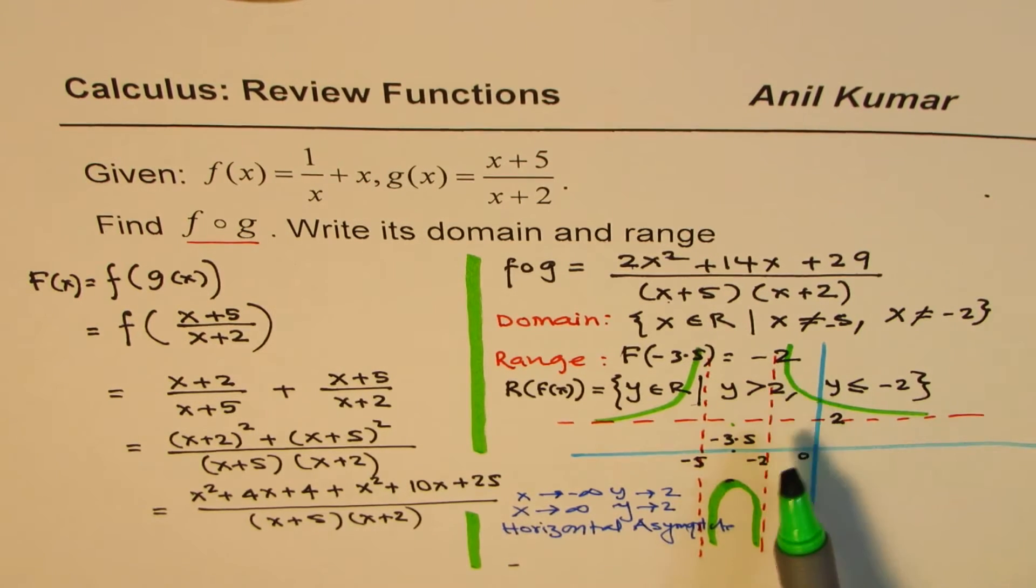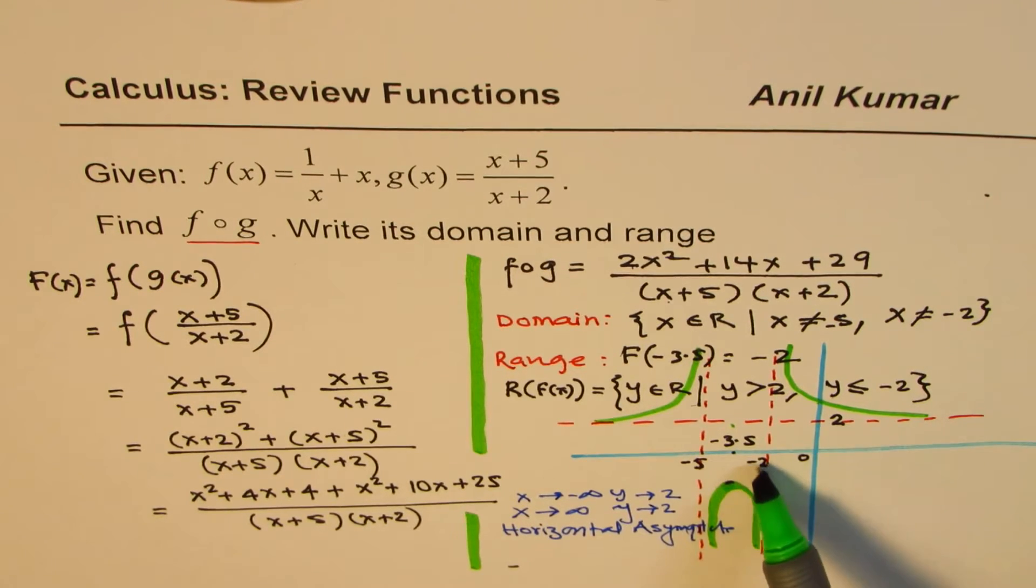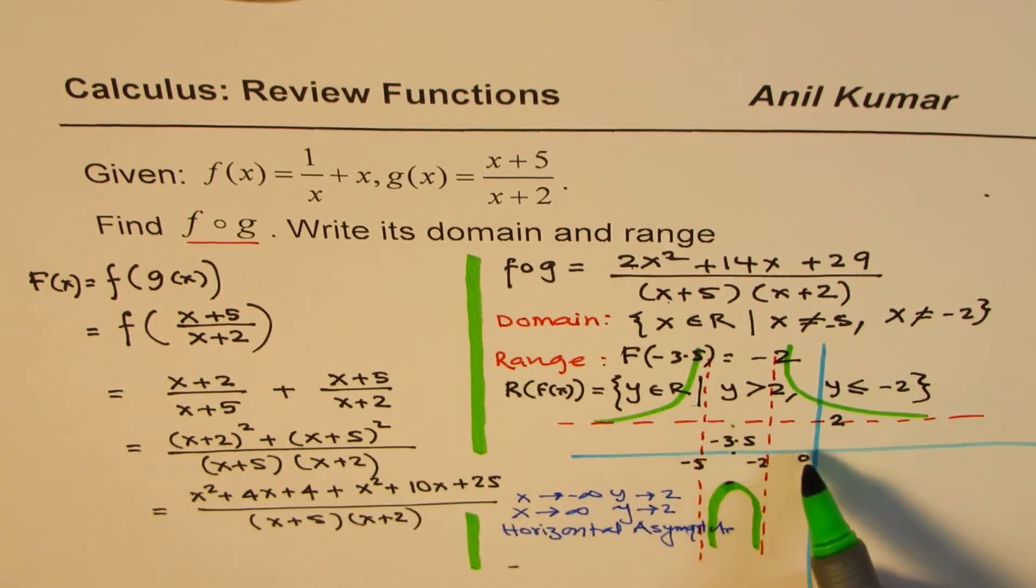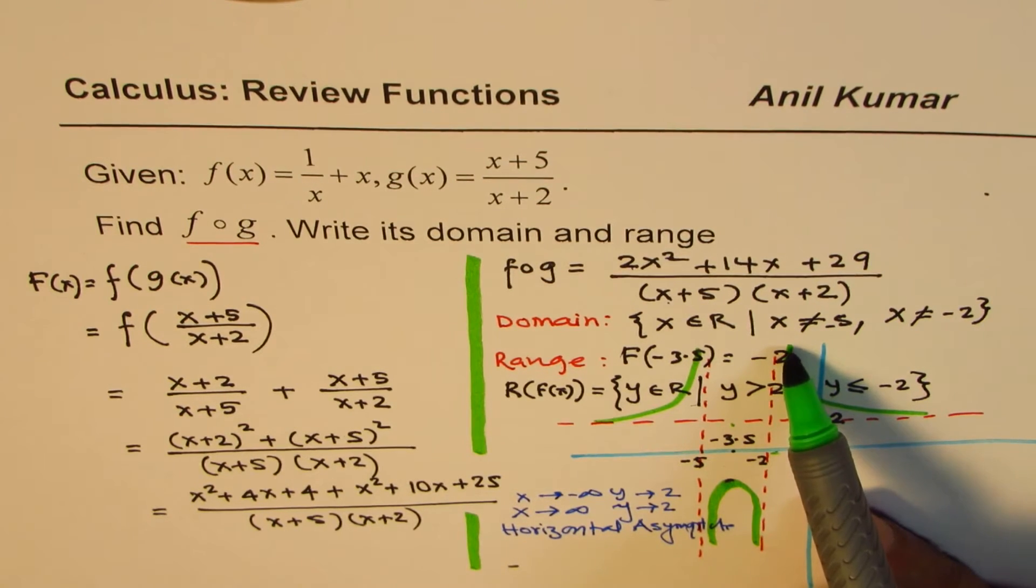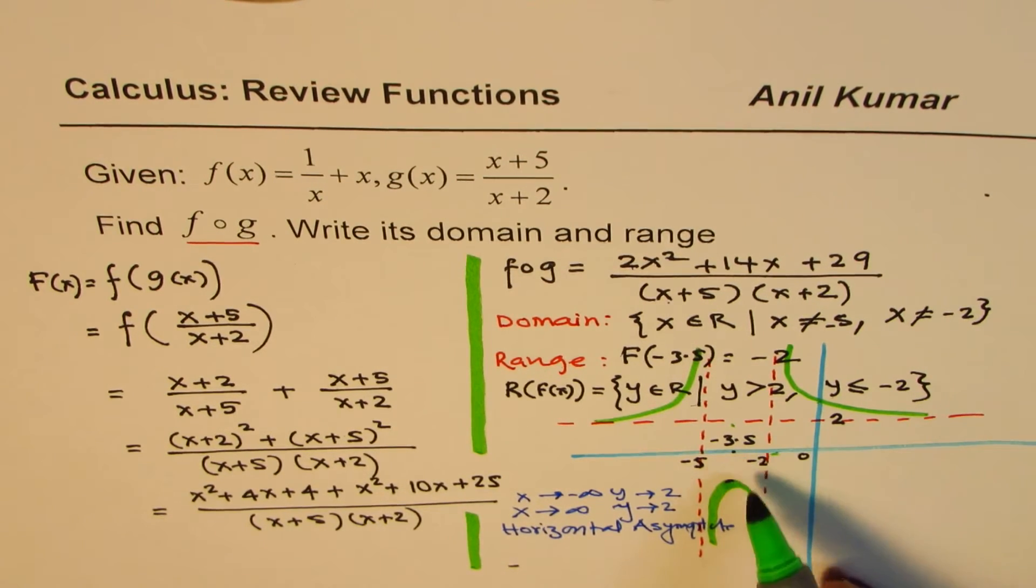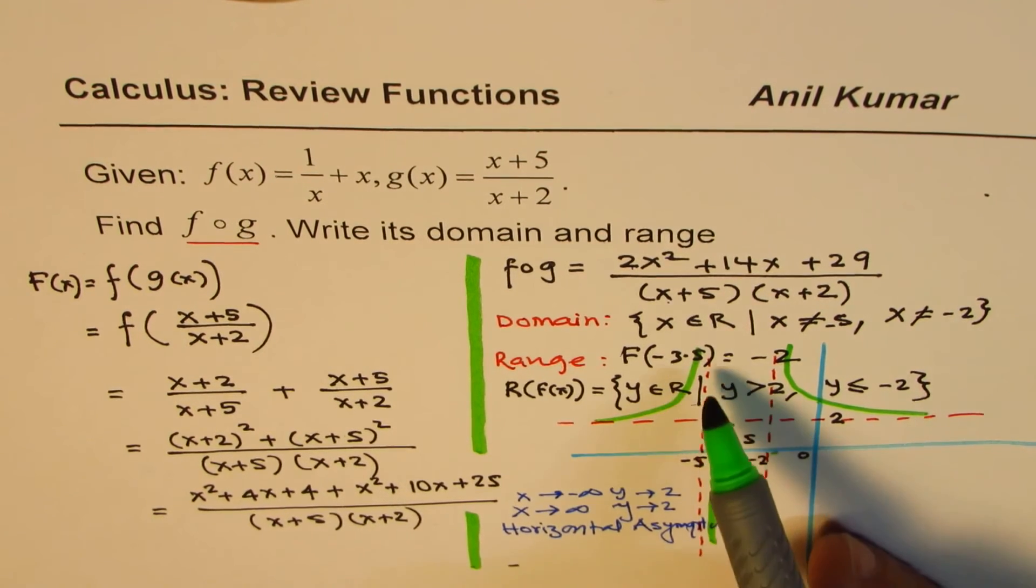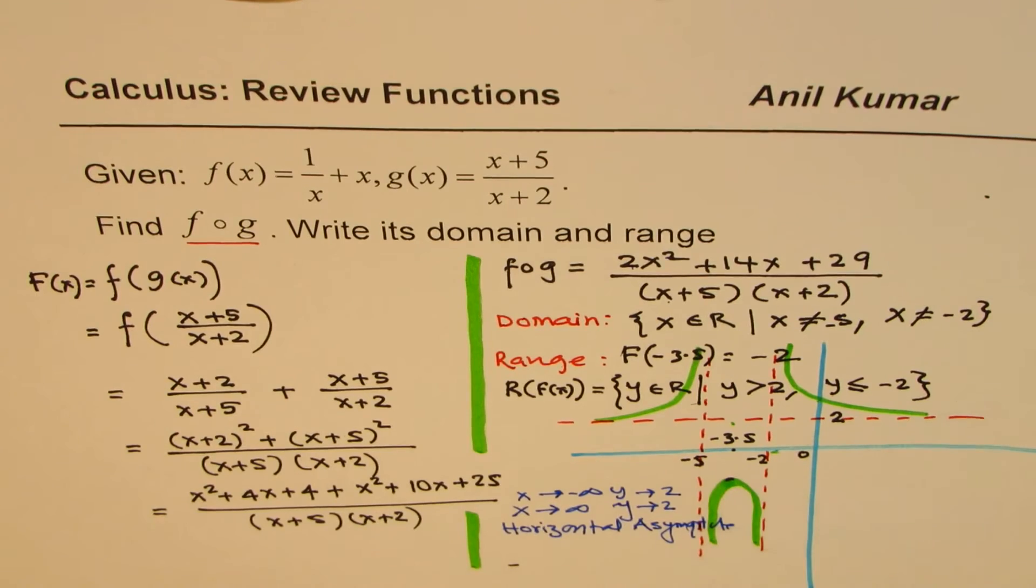Also, finding the nature of the graph near the asymptote. So if you have a value close to minus 2 from both the sides, from the right side, it will approach positive infinity. From the left side, it approaches negative infinity. Likewise, you can analyze the asymptote near minus 5 also.